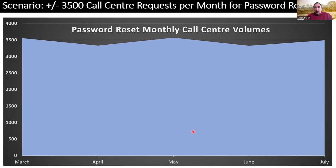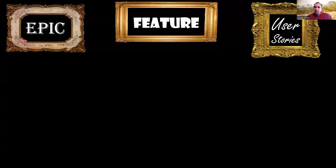Throughout this session I'll refer to a real-world example. One of my first forays into agile involved a password reset feature on a live transactional banking system. The problem was they were getting about 3,500 calls per month to the call centre, and 99% of those were for password reset. This is a multinational banking system with billions of dollars flowing through daily, but there was no self-service password reset — people had to call the call centre, consuming massive resources. It made sense to build a self-service password reset feature.